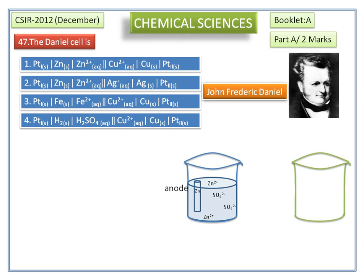The half cell on the right side has copper sulfate solution. Copper sulfate is completely ionized into Cu²⁺ and SO₄²⁻. Here also I consider two molecules of copper sulfate. The copper rod is dipped into the copper sulfate solution, called the cathode.